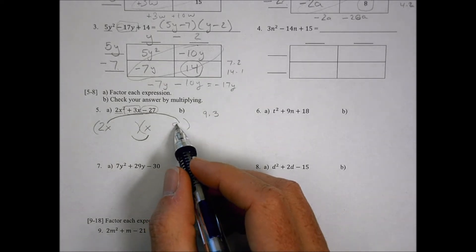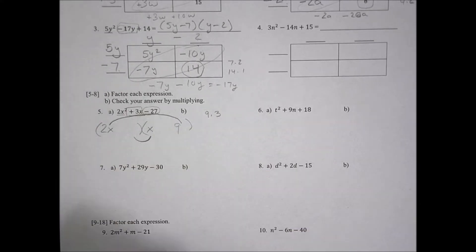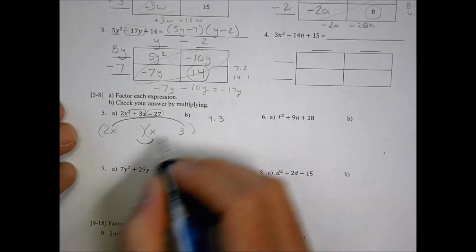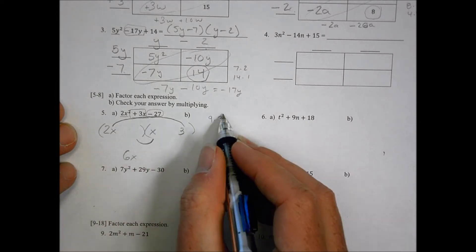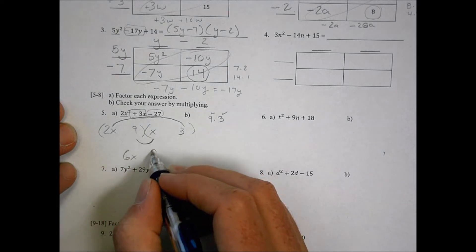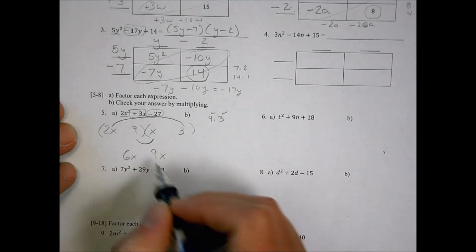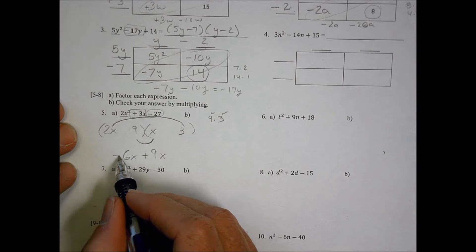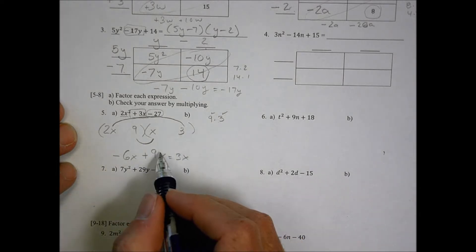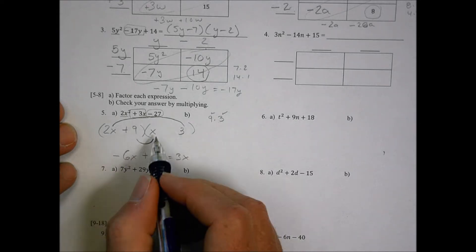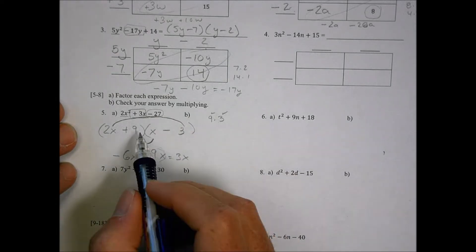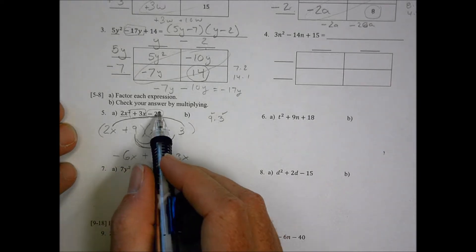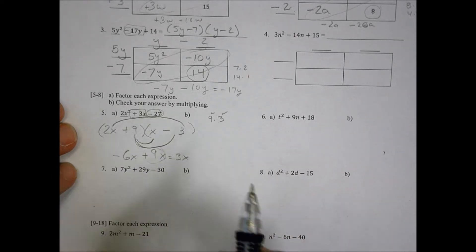My middle terms are found by multiplying the outsides and the insides together. Knowing I need to get to 3, if I put a 9 right here I'd end up with 18 — too large. Let's start with a 3 right here, giving me 6x. Then I'll use the 9 there, giving me 9x in the middle. My outside terms are 6x, inside terms are 9x. If this is positive and this is negative, I end up with the 3x I'm looking for. So the plus goes there and the negative there. Checking: 9 times negative 3 equals negative 27 — works out.